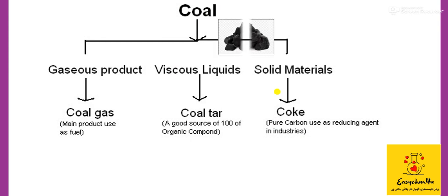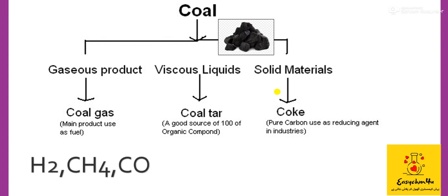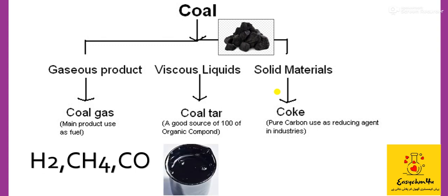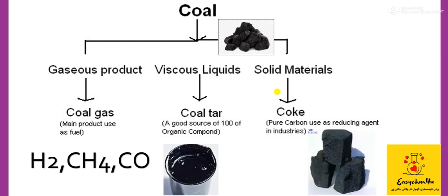What is the difference between coal and coke? Both are types of coal — what we call 'koila'. Coal gas contains hydrogen gas, methane, and carbon monoxide. Coal tar is the viscous liquid, also a type of coal product. You can see the difference clearly here.